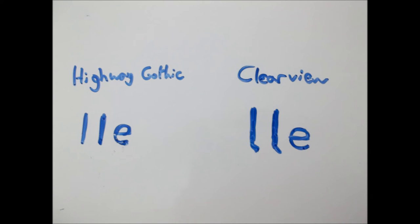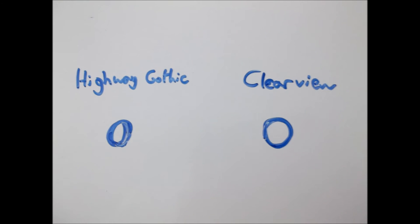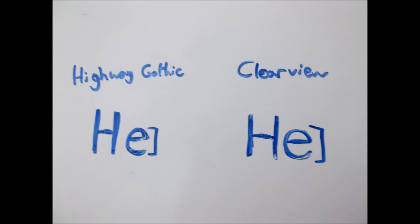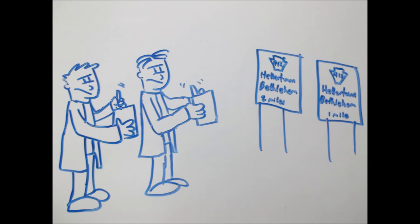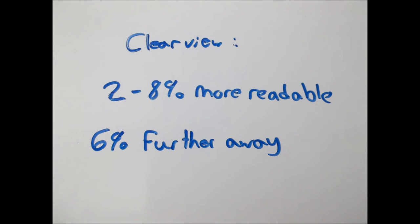Clearview looks fairly similar to highway gothic, but there are a few important differences. The letters were all spaced closer together. The spaces inside letters, also known as counters, were bigger, and its x-height was higher. When initial tests were done putting the two typefaces against each other, it was found that Clearview was 2-8% more readable, with its signs being able to be read about 6% further away.